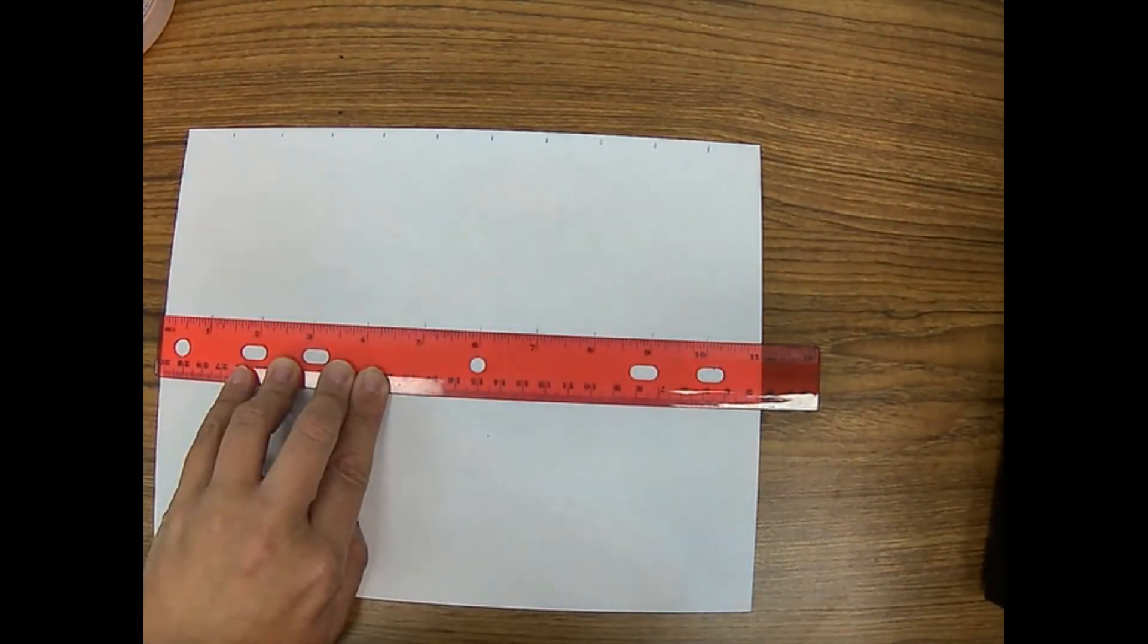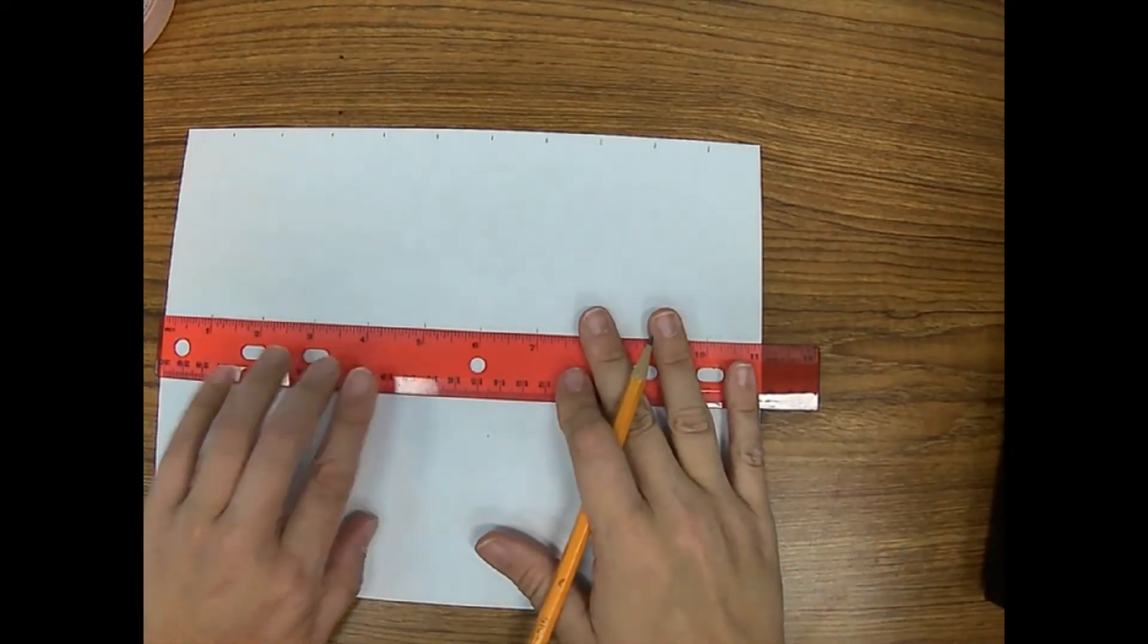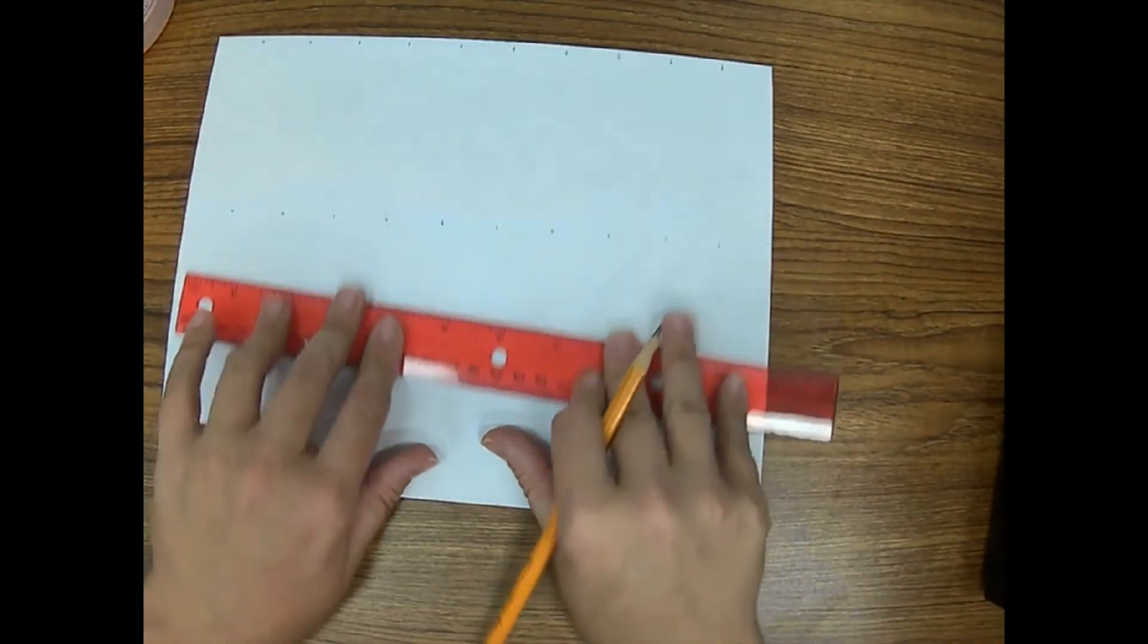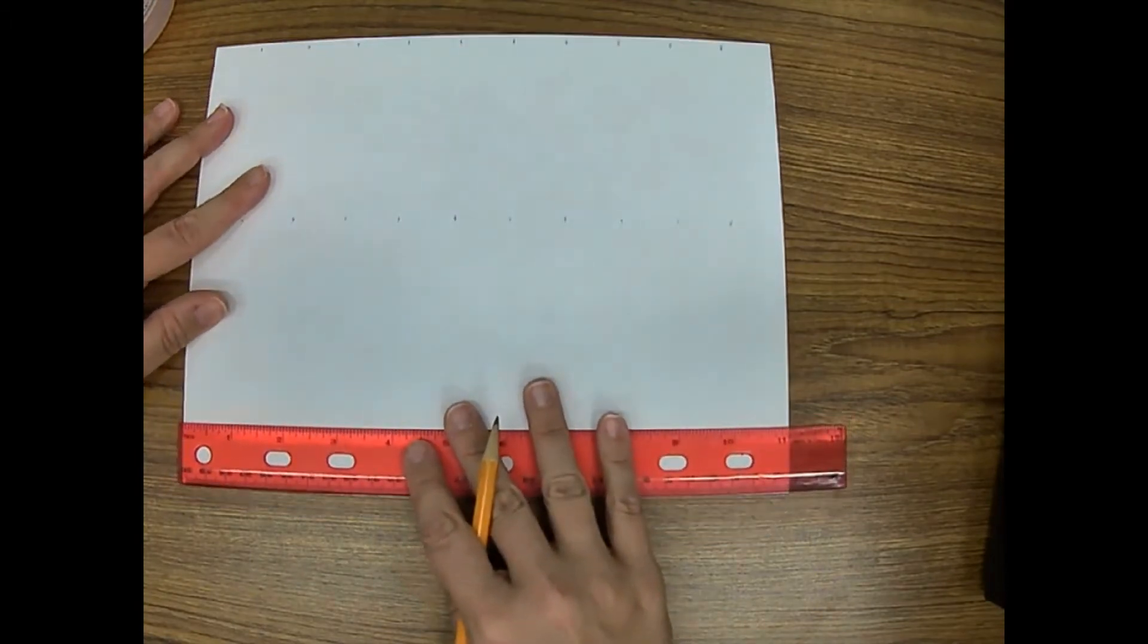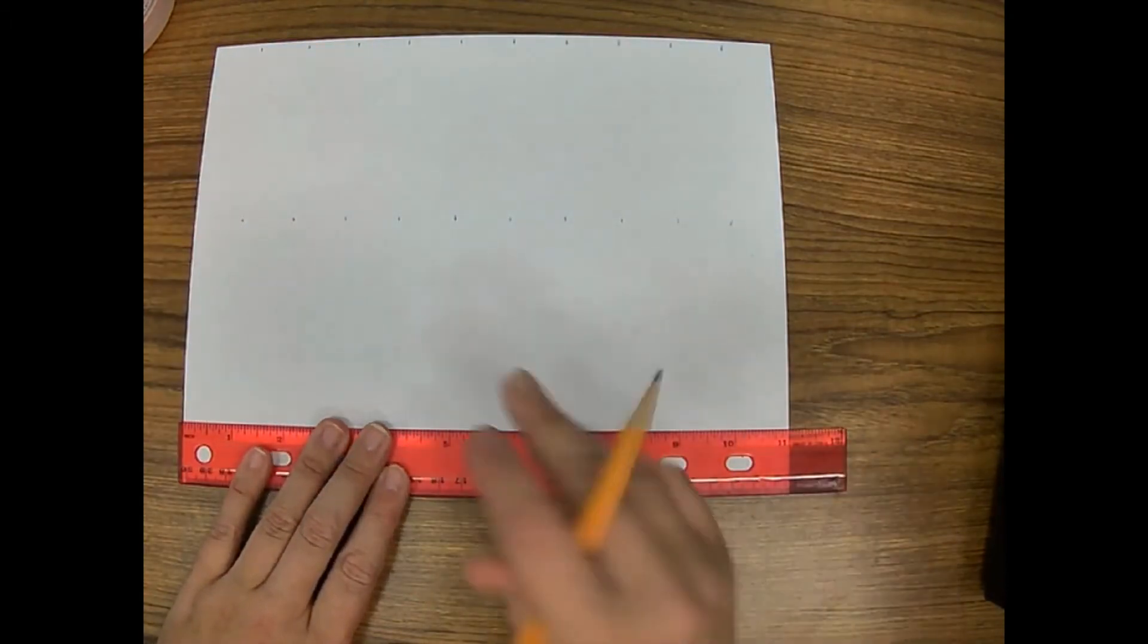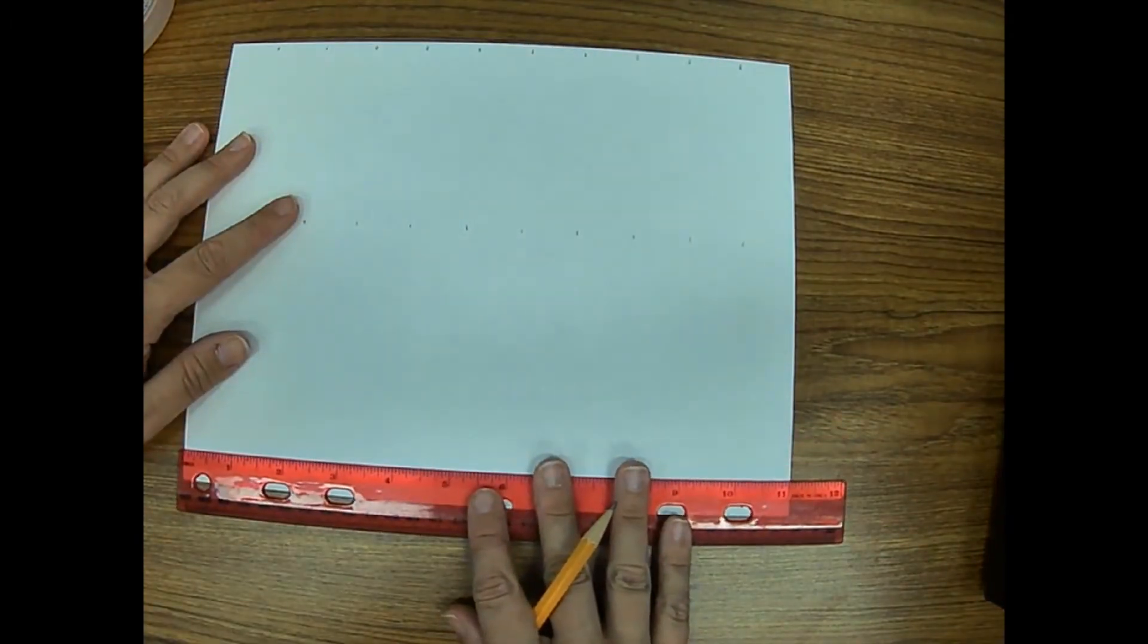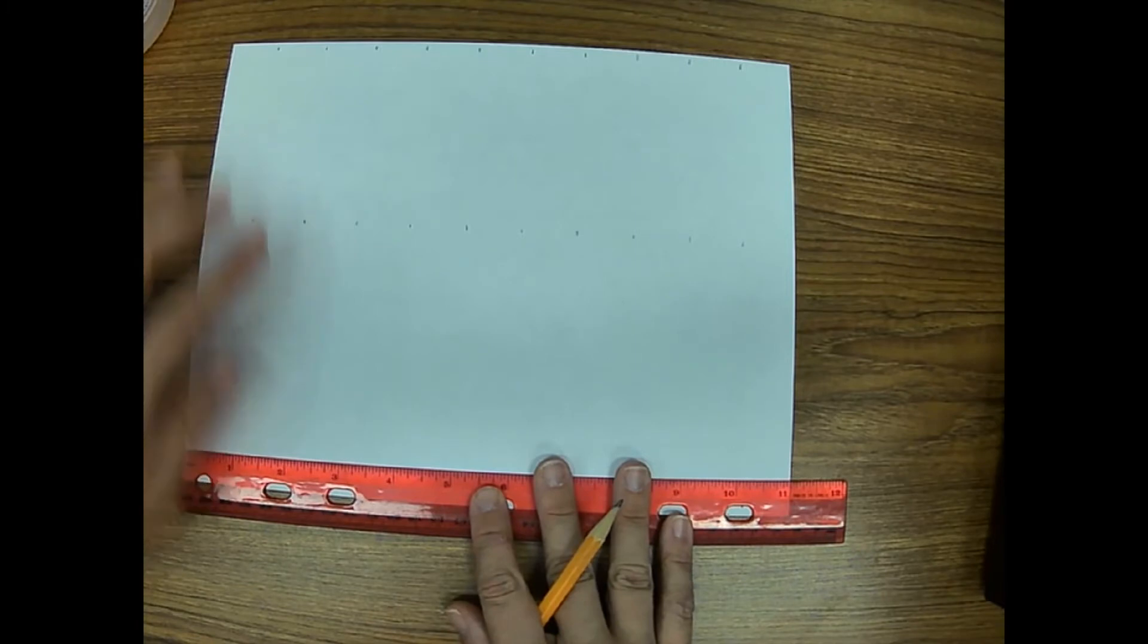And since this is an 11 inch piece of paper, I don't have to worry about being off. Now you're going to see that we're going to have a half inch and I'm going to show you how I take care of that problem early on. Now we're going to slide our ruler again.